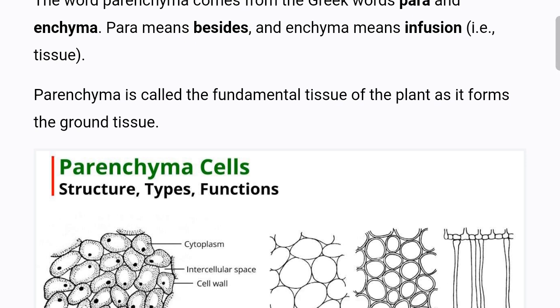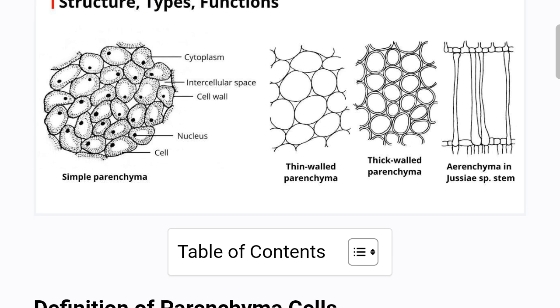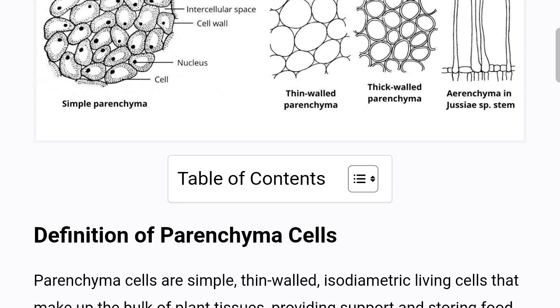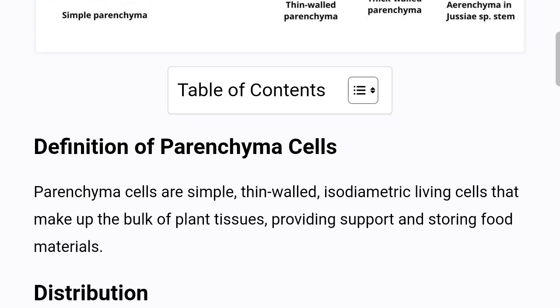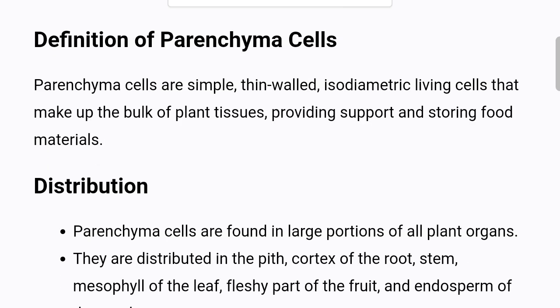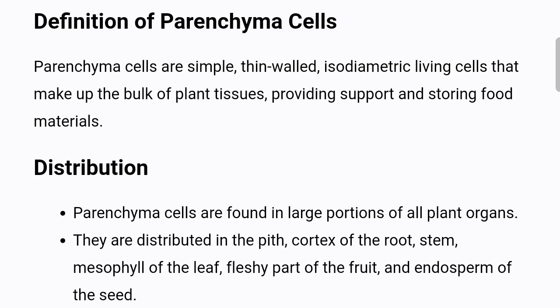Definition of parenchyma cells: Parenchyma cells are simple, thin-walled, isodiametric living cells that make up the bulk of plant tissues, providing support and storing food materials.